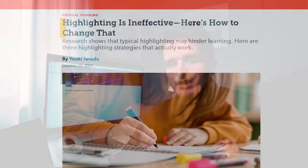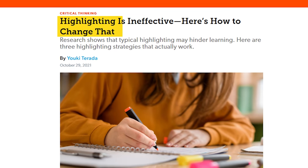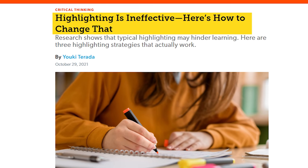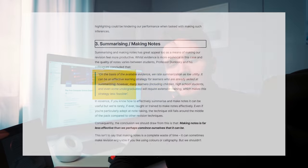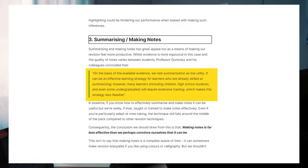The second thing that doesn't work according to science is highlighting. Again, this is something that a lot of people do — you'll highlight stuff from your lecture notes, from your book. It turns out this is not a very efficient way to learn at all. The last thing, which surprisingly doesn't work, is summarizing.